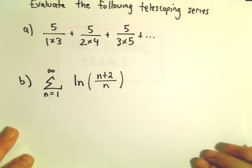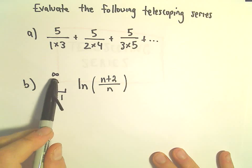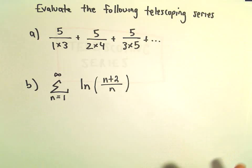Okay, so another example here of a telescoping series. Here we're going to think about the series from n equals 1 up to infinity of the natural logarithm of n plus 2 over n.